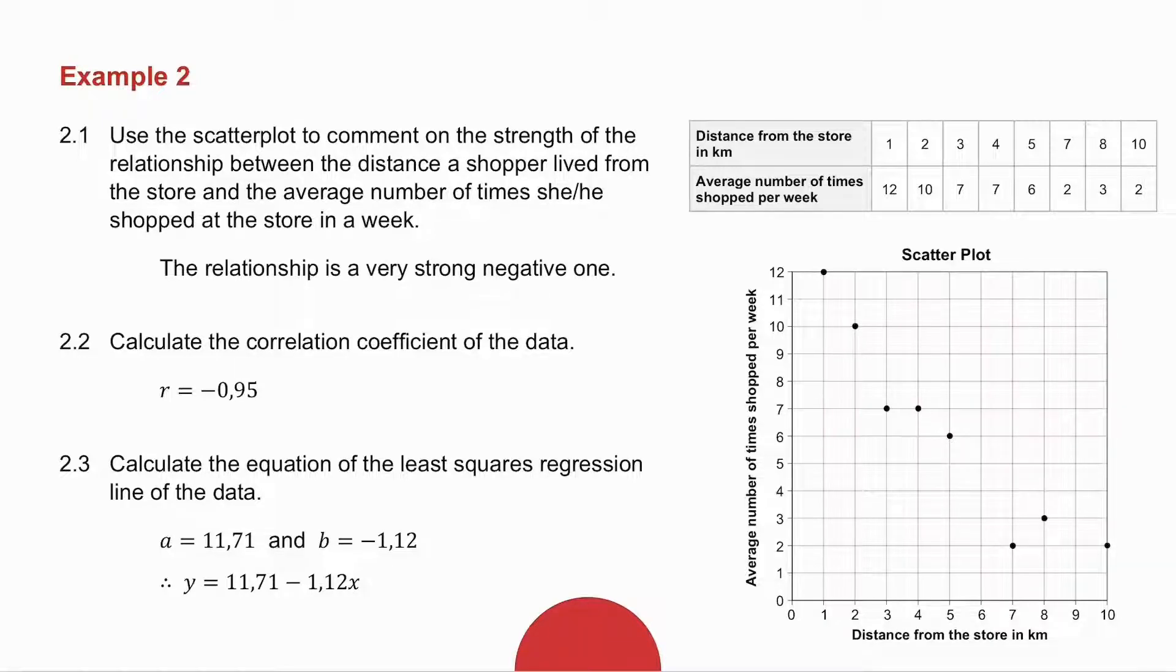2.3, they ask you to calculate the equation of the least squares regression line. Now, you've already got your data in the calculator from the correlation coefficient. So get your value of A, get your value of B, and write it in the form Y equals A plus BX.